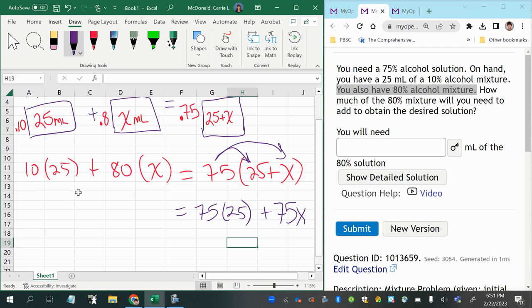And then you can simplify the left side as well. I don't know why I started on the right, but it doesn't really matter. 10 times 25 would give me 250 from right here, and then the 80 times x would just be 80x.